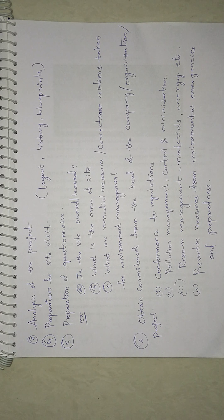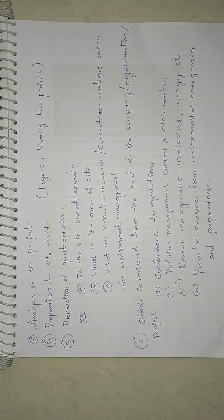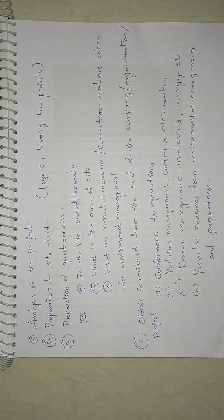Write all these points under pre-audit activities only. The questionnaire should cover all aspects of the environment and must be completed by the internal auditor. Sample questions include: Is the site owned or leased? What is the date of purchase? What is the area of the site? What remedial measures or corrective actions are to be taken for environmental management?